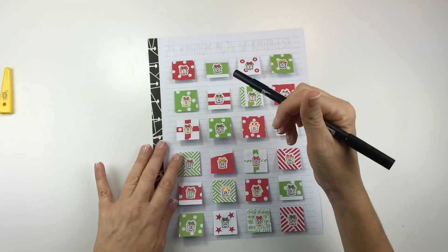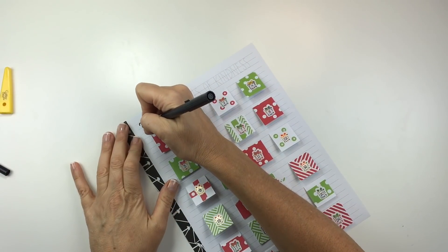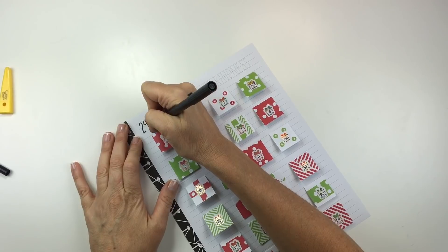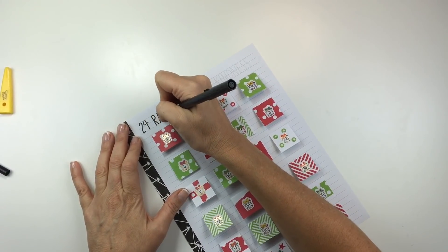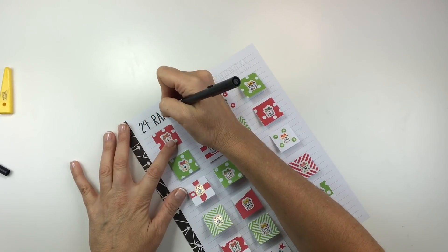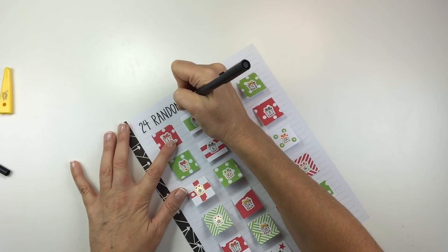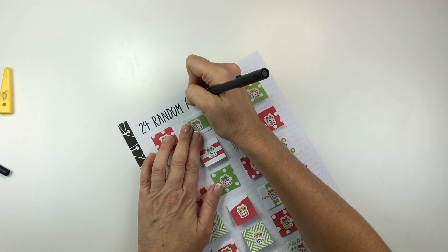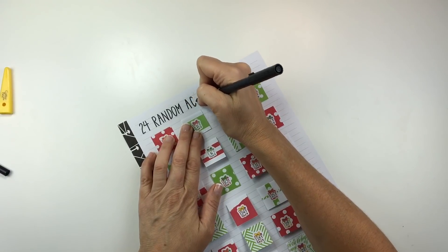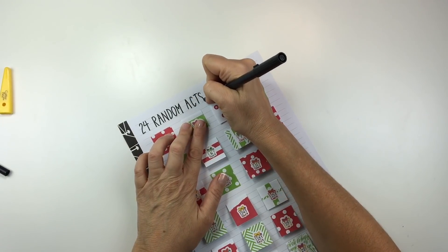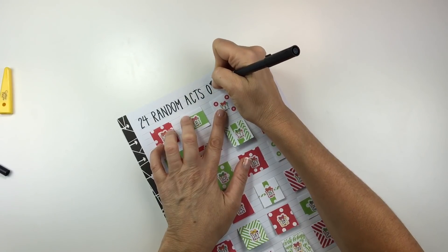Off camera I penciled in the 24 random acts of kindness at the top of the page and I'm just using my Tombow dual brush pen that I always use to just trace my writing. I didn't write it with you guys in pencil because it's easier for me to write if my face is closer to the page and I can't do that with my camera.